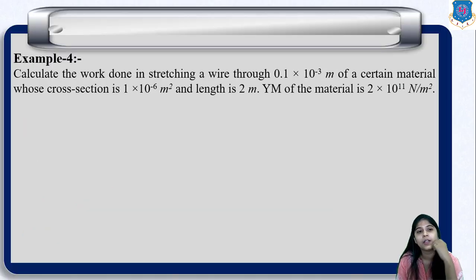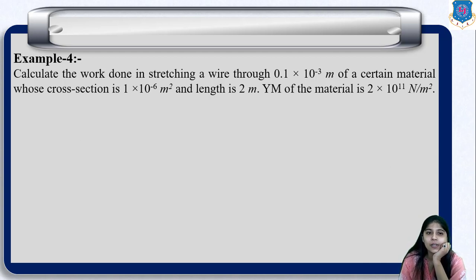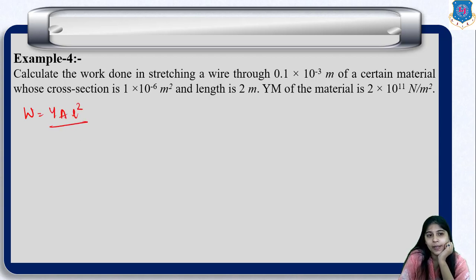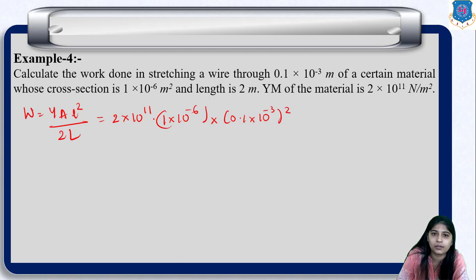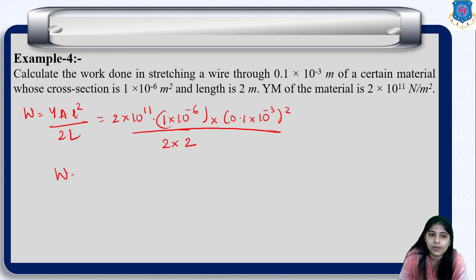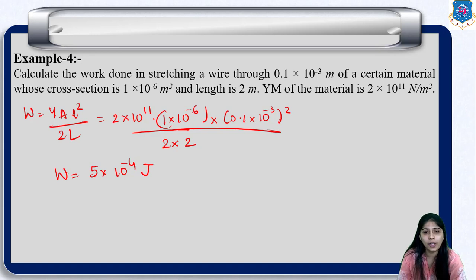Now example 4: Calculate the work done in stretching a wire through 0.1×10⁻³ meter, given cross section 1×10⁻⁶ m² and length 2 meter. Young's modulus is also given. The formula for work is W = Y×A×(δL)² / (2L). Substituting: Y = 2×10¹¹, area = 1×10⁻⁶ m², stretch = 0.1×10⁻³, original length = 2 meter. We get work = 5×10⁻⁴ joules.